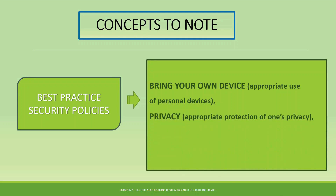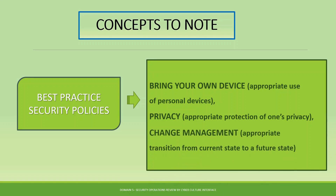Another common best practice security policy is privacy. Security policies around privacy help implement appropriate protection of individuals' privacy — covering how you handle other people's data and your own data within the organization. Another common policy implementing best practice is change management, which specifies how transitions from one state to another are implemented within the organization.